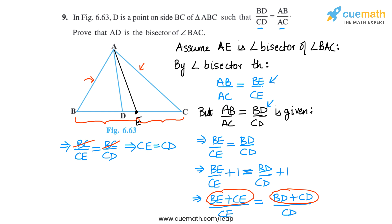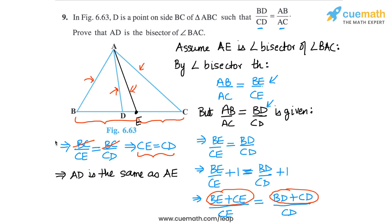Cancelling BC from both sides gives CE equals CD. This is only possible if AD is the same as AE, otherwise CE can't equal CD. So AD is the same as AE, and since we assumed AE is the angle bisector of angle BAC, this means AD is also the angle bisector — AD bisects angle BAC.